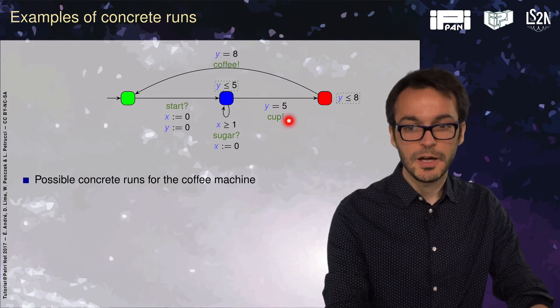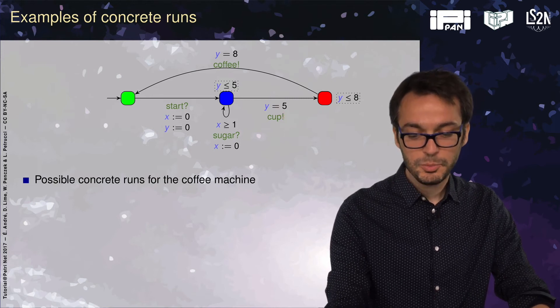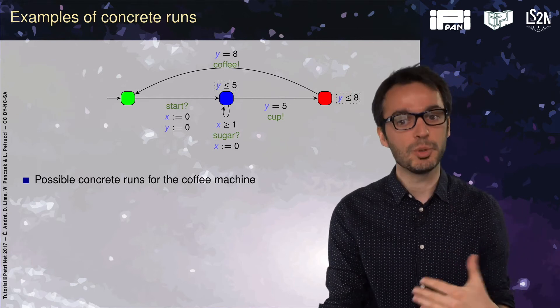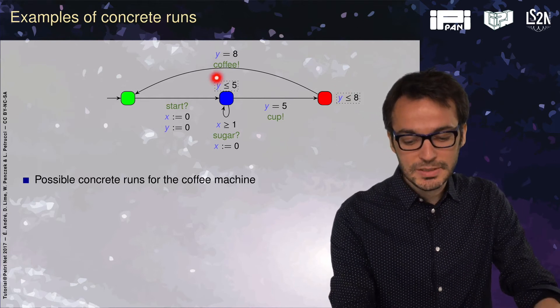When y is equal to five, we get the cup. We go in the red location, which is where the coffee is being prepared. And then after eight time units, you would get the coffee.